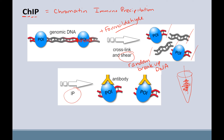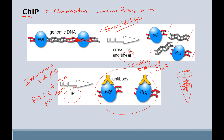Then you do the IP part. Whenever you see the word 'immuno,' that means you're using an antibody. Antibodies are very specific for proteins — in this case, we have an antibody to the polymerase. The precipitation part is also called pull-down. What's happening is you're specifically binding your antibody to the protein of interest and then pulling it away from all the other DNA that was not bound, getting specificity. Then you use PCR to see what DNA was pulled down — what DNA was interacting with that specific protein.